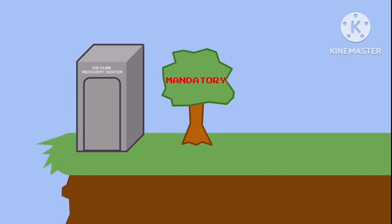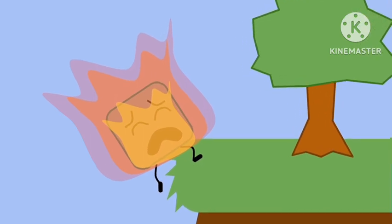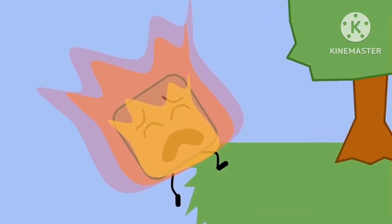And attach a spring from the tree to the ice cube recovery center, and then melt ice cube. Melting your kills are right. Okay, good.